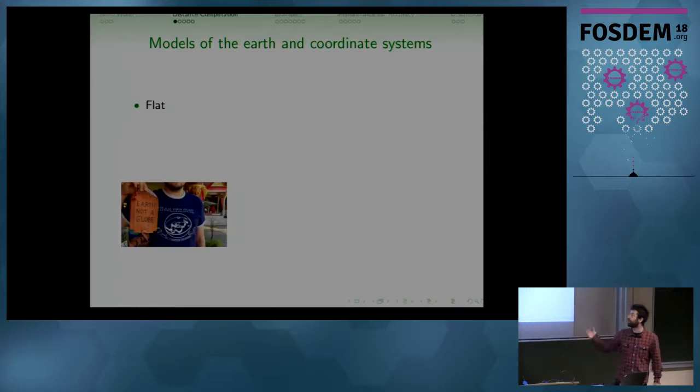We have models of the Earth. It seems that we are like these guys that believe the Earth is flat. In this case, the maths are very simple. We use Pythagorean theorem, and everything is one line of code. But unfortunately, Earth is not flat. It could be a sphere. This is used in Google Maps, for example. It's widely used.